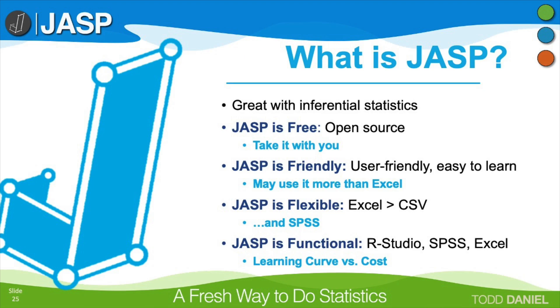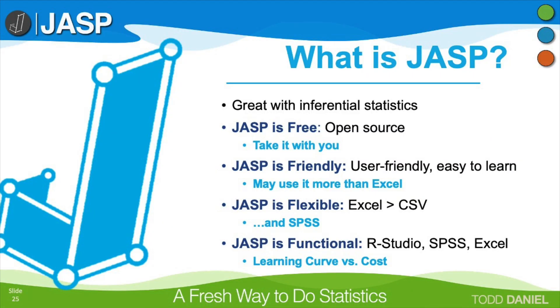JASP is functional. We could use programs like R with RStudio, but that has a high learning curve — it's difficult to learn and difficult to teach, and you almost need to be a computer programmer to use it for most analyses. Or we could use more user-friendly programs like SPSS, but those are very costly and proprietary, so you would not have access after you graduate. JASP is both user-friendly and free, making it a very flexible solution for statistical analysis, especially for students in a basic business statistics course.